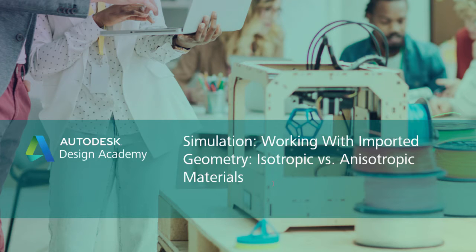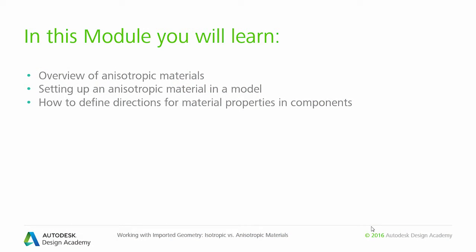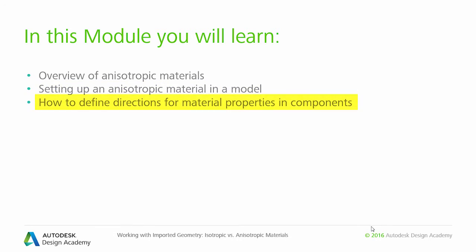Hello and welcome to the Autodesk Design Academy. In this sixth module, we will be talking about using anisotropic materials in your analyses, including an overview of the differences between isotropic and anisotropic materials, how to set up a part to use an anisotropic material model within the element definition dialog, and how to orient anisotropic material properties by defining the strong and weak material axes directions.